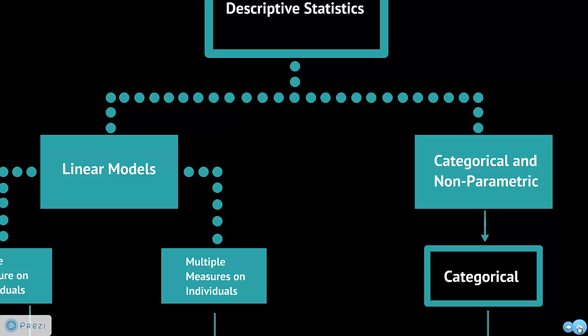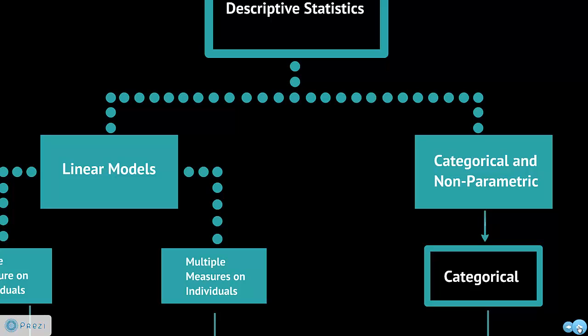On the left, you see we have linear models. Really, what that means is you can use a line to describe the world. Remember, we talked about models. You're going to use a line to create a model of the world. On the right-hand side, we're not using lines anymore, but we are looking at categories and what are called nonparametric, which is a big scary word for how do you analyze ranked data - more or less, some, none, those kinds of things.